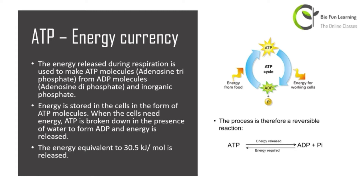ATP's full form is adenosine triphosphate. ATP is formed from ADP (adenosine diphosphate) and inorganic phosphate. Whenever the body needs energy, ATP breaks down to form ADP and releases energy. When one molecule of ATP breaks down, the energy released is 30.5 kilojoules per mole. According to how much energy the body requires, ATP will release and ADP will form.